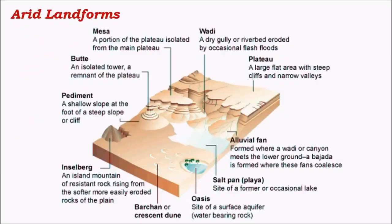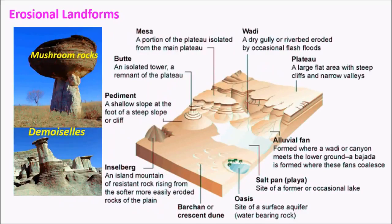The next important landforms are arid landforms. The cycle of erosion in arid areas is mainly carried out by wind. Some landforms are erosional in nature whereas others like barchans are depositional. A few rocks in desert regions are shaped like mushrooms or umbrellas — these are called mushroom rocks. They are found mainly due to differential erosion: wind carries more sand near the surface, so the rock at the surface undergoes more erosion.